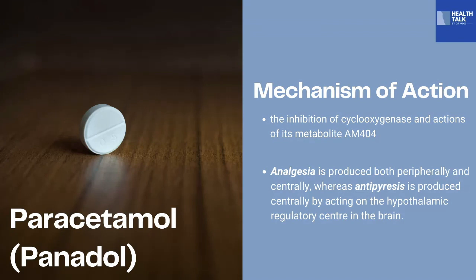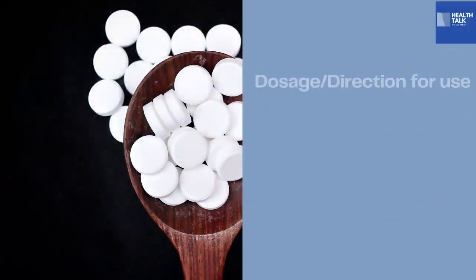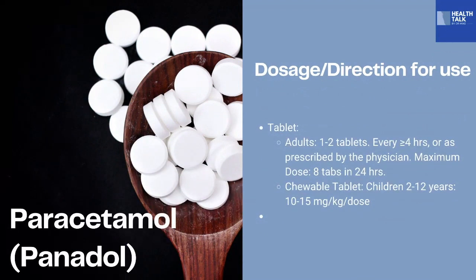This medication is taken by mouth, and paracetamol is rapidly absorbed from the small intestine, while absorption from the stomach is negligible. Regarding dosage and directions for use, this medication is usually in tablet form. It is prescribed among adults as one to two tablets of 250 or 500 milligrams every four hours, or as prescribed by the physician. In certain cases, this medication is given in chewable form among children 2 to 12 years old, with a computed dose of 10 milligrams per kilogram per dose.